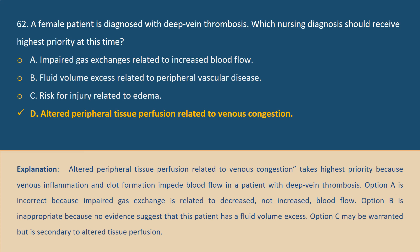Answer D. Altered peripheral tissue perfusion related to venous congestion takes highest priority because venous inflammation and clot formation impedes blood flow in a patient with deep vein thrombosis. Option A is incorrect because impaired gas exchange is related to decreased, not increased, blood flow. Option B is inappropriate because no evidence suggests fluid volume excess.